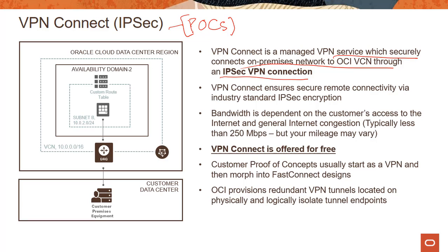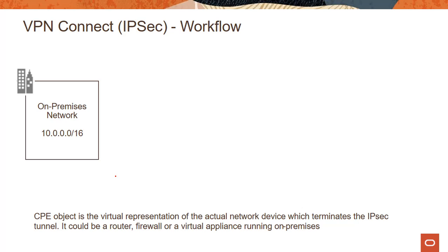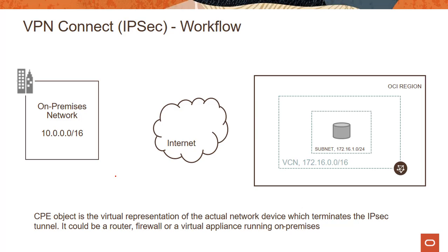OCI provisions redundant VPN tunnels located on physically and logically isolated tunnel endpoints. Coming out of the DRG, you get two different tunnels managed on physically and logically redundant hardware — so if one piece of hardware goes down, the tunnels don't all go down. The whole idea is to provide high availability. We give you two tunnels and recommend using both. In the demo, I'll just provision one tunnel for the sake of time, but you can see that two tunnels are provided when you create the IPsec connection.